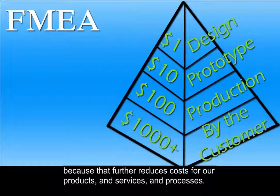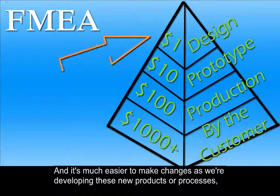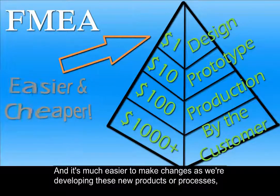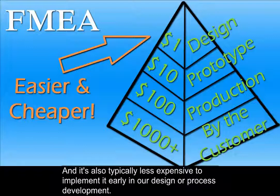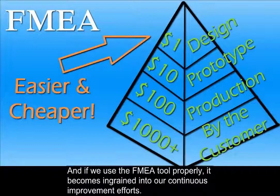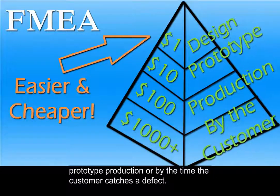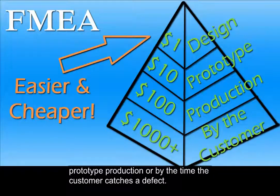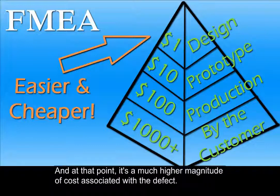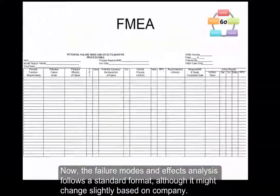With FMEA, we're trying to take a proactive approach so that we're spending time upfront, which further reduces costs for our products, services, and processes. It's much easier to make changes as we're developing these new products or processes, and it's also typically less expensive to implement it early in our design or process development. If we can find a potential failure as we're designing the process, it's much easier and less expensive than if we catch it in the prototype production or by the time the customer catches the defect. At that point, it's a much higher magnitude of costs associated with the defect.